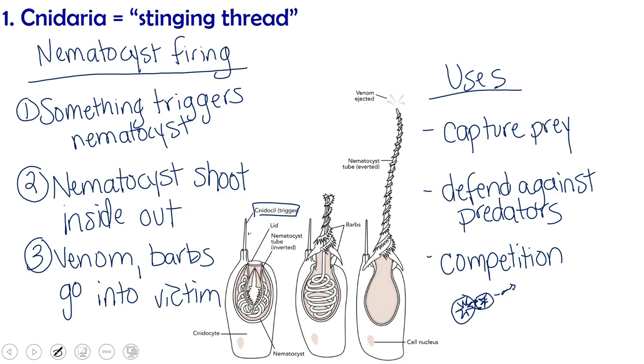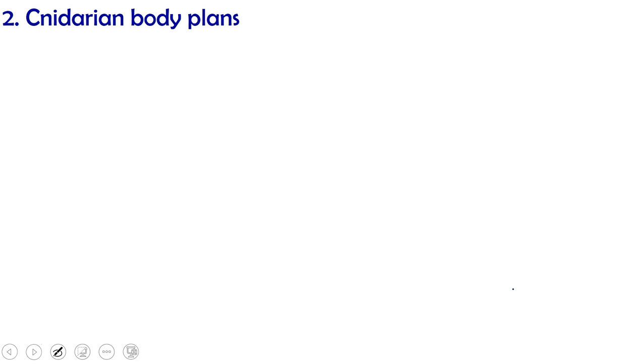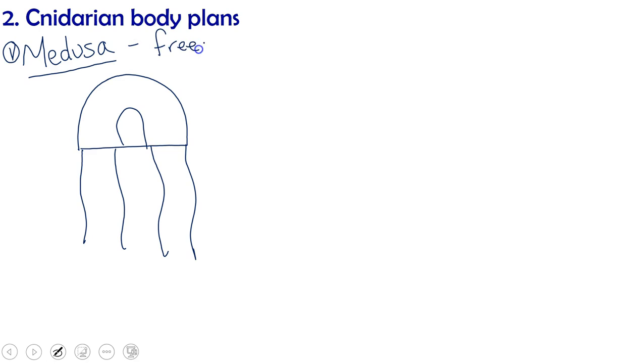So now let's take a look at our cnidarian body plans. There are two basic cnidarian body plans that are actually kind of just flipped upside down. So let's take the first one. The first one is a medusa. Yes, it's named after the snake hair lady in Greek mythology. So our medusa looks something like this. This is the free swimming or mobile body form.